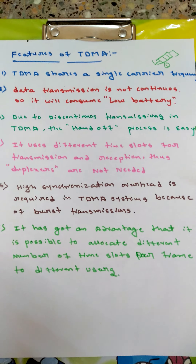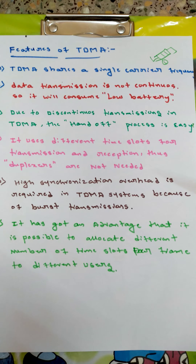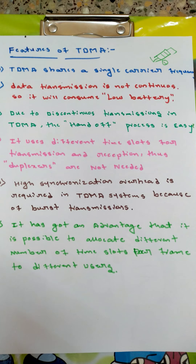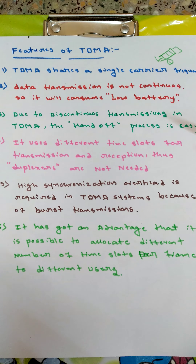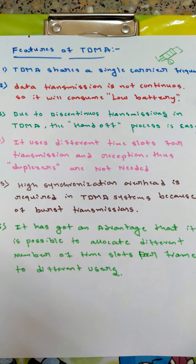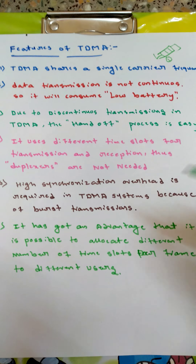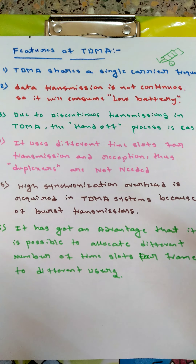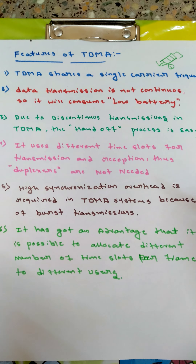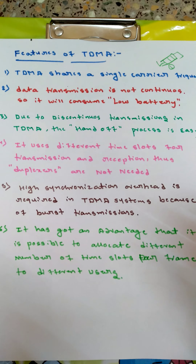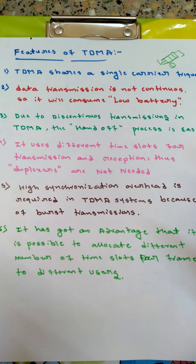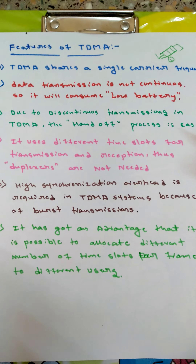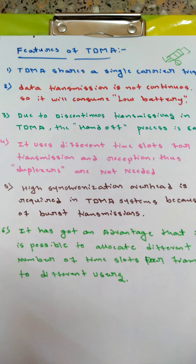The second point is that data transmission is not continuous in TDMA, so it will consume low battery. Data transmission happens using the buffer and burst method. Suppose two persons are talking on the phone — while one person is talking, the other's data is stored in buffer registers, and when that person stops talking, the data is transferred over the channel. This way, the persons talking don't feel any discontinuity in their transmission.